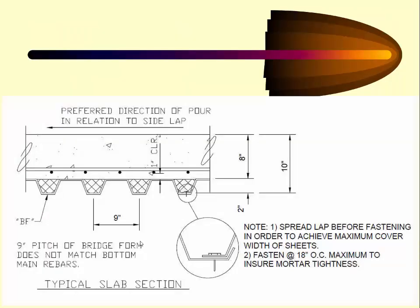When placing the decking, it needs to be placed in the direction of the pour. If it's placed in the opposite direction, the weight of the concrete pushing down the decking might open up the seam and allow mortar to pour out. Remember, these need to be mortar-tight, so to keep them mortar-tight they need to be placed in the direction of the pour.